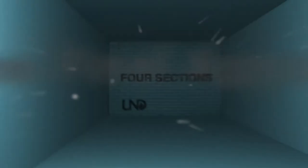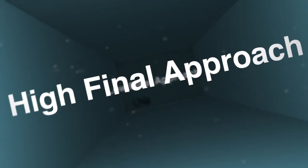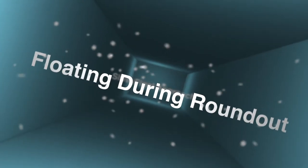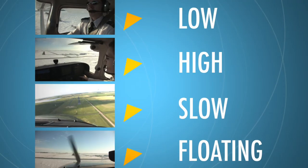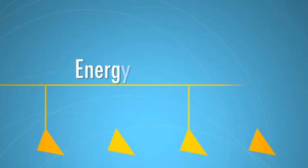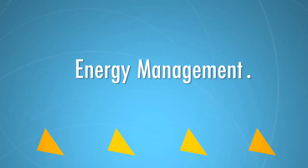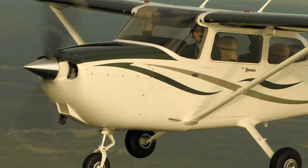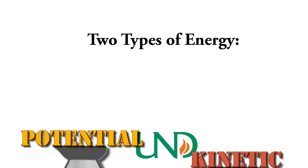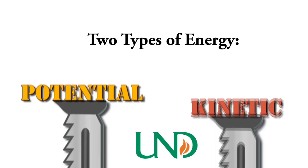This first podcast in the series on faulty approaches and landings will begin with four of these sections: low final approach, high final approach, slow final approach, and floating during roundout. Each of these — low, high, slow, and floating — share the common thread of energy management during the approach and landing phase. In a simple mechanical system, there are two forms of mechanical energy to consider: potential and kinetic.